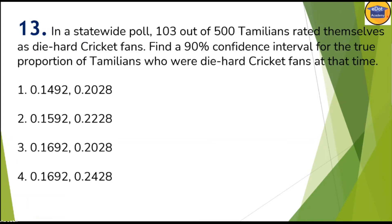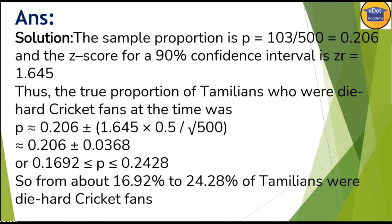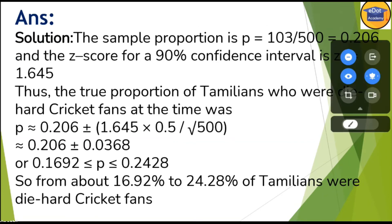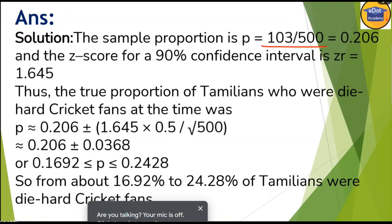In a statewide poll, 103 out of 500 rated themselves die-hard cricket fans. Find the 90% confidence level for the true population proportion of die-hard cricket fans. You have to calculate the Z factor for 90% confidence level. Probability will be 103 divided by 500. The calculation gives probability equals 0.206.